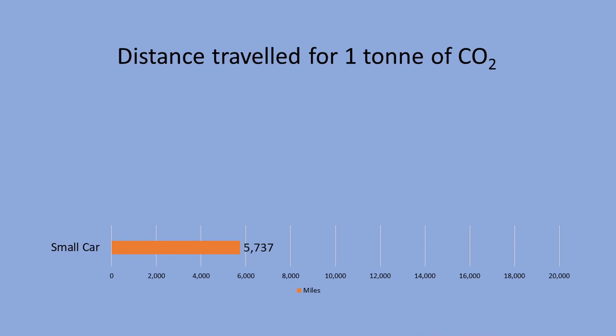Next, let's relate that same one tonne of CO2 to our travelling, whether for commuting to work, business travel, or personal travel for the weekly shop or for holidays. One tonne of CO2 is equal to running a small petrol car, such as a Peugeot 107, Volkswagen Up or Citroën C1, driving for approximately 5,737 miles, which is about 85% of the average mileage of 6,800 miles per year in the UK.